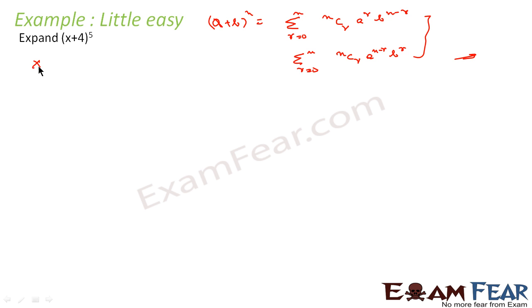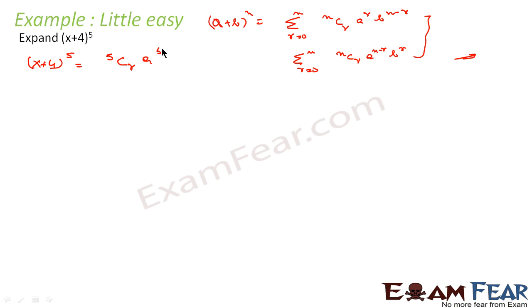For (x + 4)^5, here n = 5. This becomes the summation from r = 0 to 5 of 5Cr times a^(5−r) times b^r.